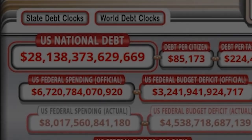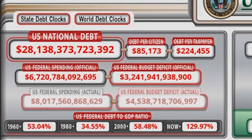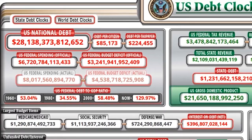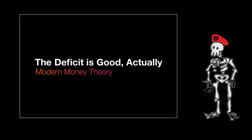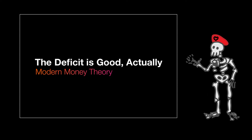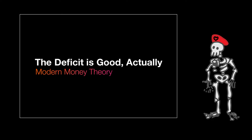As I record this, the national debt of the United States is $28 trillion, at least according to this website. I'm here to tell you that that's not a problem. This is going to be the first in a series of videos where I discuss a theory of how modern money works, called Modern Money Theory. This webisode is going to be about government debt.